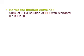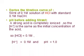We will derive the titration curve of 50 milliliters of 0.1 molar HCl titrated with standard 0.1 molar sodium hydroxide. The sample is hydrochloric acid at 0.1 molar concentration and 50 milliliter volume. The titrant is standard 0.1 molar sodium hydroxide in the burette. We will calculate pH at four points to construct the titration curve.